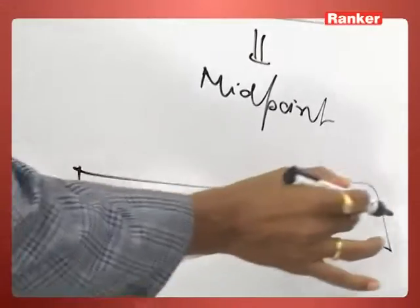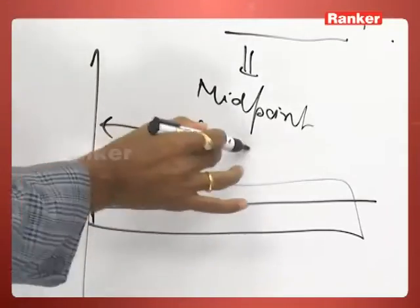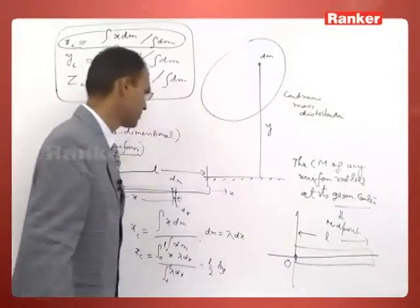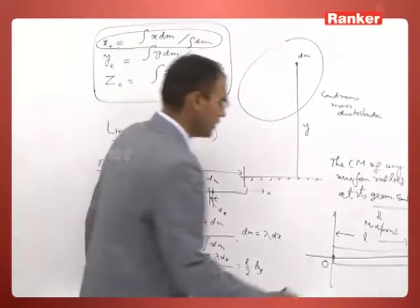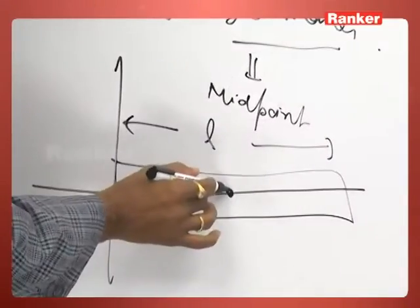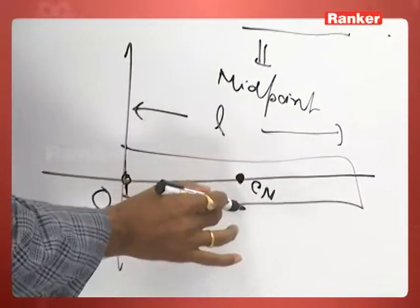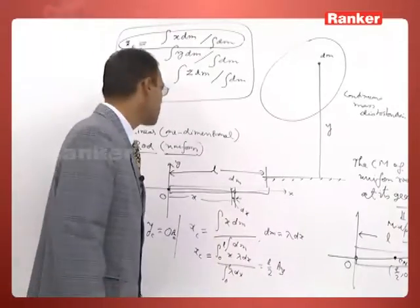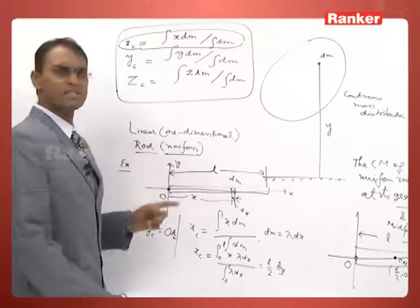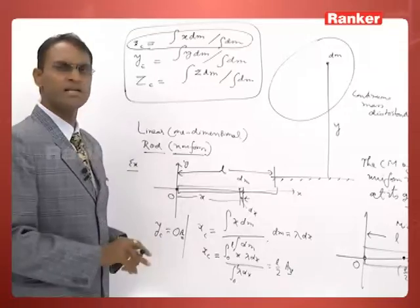The center of mass of any uniform rod lies at its geometrical center — that is, the midpoint of the rod is its center of mass. So if you consider one end as the origin and l is the length of the rod, you can directly take the geometrical center without doing the derivation. Its coordinates are (l/2, 0).